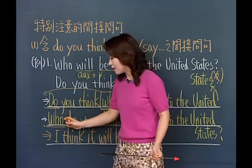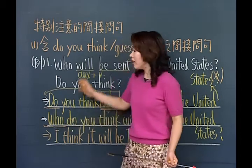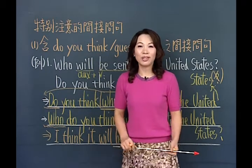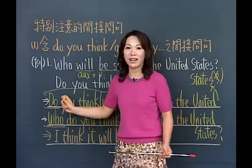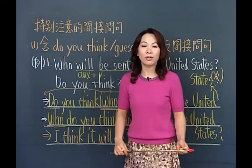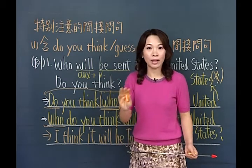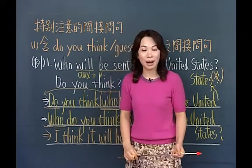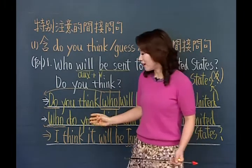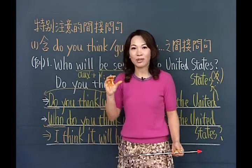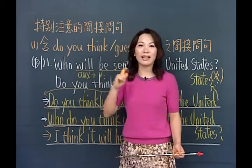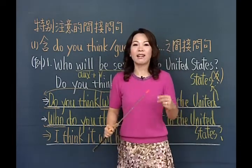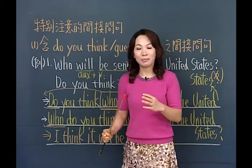你必须要清楚：B动词开头的问句回答Yes/No，疑问词开头的问句不回答Yes/No。你这两句合并起来要不要人家回答Yes/No？只有你最清楚，因为你是发问的人。如果你需要人家回答是或不是，那就B动词、助动词开头；如果你不需要人家回答是不是——「你认为谁会被派去美国呢？汤姆啊！」——那就用疑问词开头。所以多一个步骤，这样了解吗？